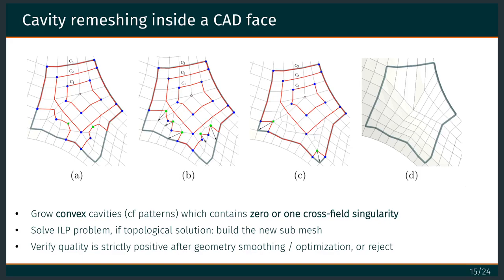For this, we grow cavities in the unstructured mesh and replace a patch of quads with a more regular pattern. Here we go from 11 irregular vertices on the left to just one on the right. Of course, we always have to verify the geometry.